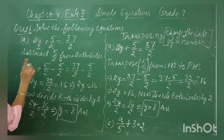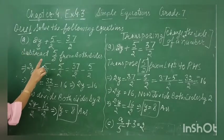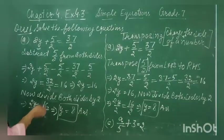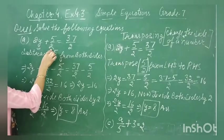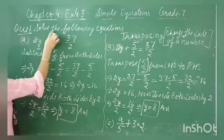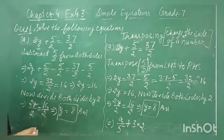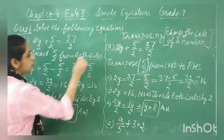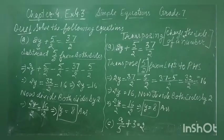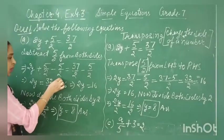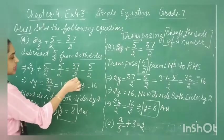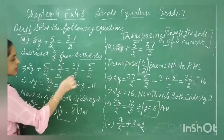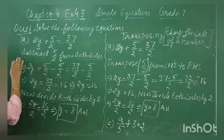We have to follow step by step. First we want to eliminate the constant present in the addition or subtraction — here, 5 by 2 is present in addition. We have to subtract 5 by 2 from both the sides. So: 2y plus 5 by 2 minus 5 by 2 on the left hand side, and minus 5 by 2 on the right hand side.